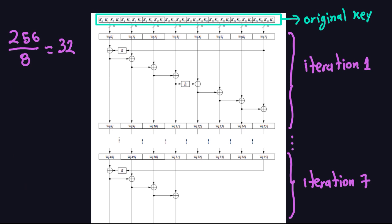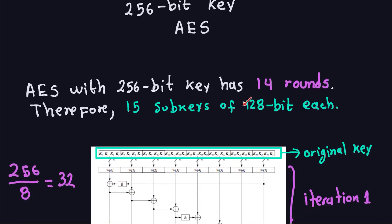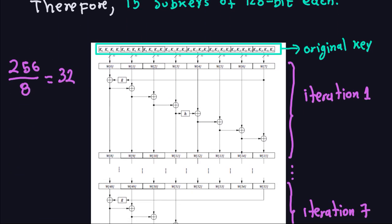The first round is here. What I have in this part, marked with the green block, is the original key, which is 256-bit length. There are some k's there, from k0 to k31, so in total 32 k's. Each one of them represents a byte — k0 will be a byte, k1 will be a byte, and so on.